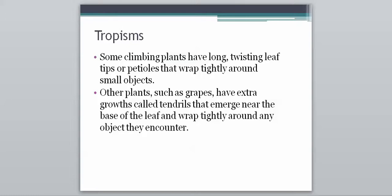Other plants, such as grapes, have extra growths called tendrils that emerge near the base of the leaf and wrap tightly around any object they encounter. So tendrils is an important word. It's almost kind of like the fingers of a plant, if you will. That's how strongly they can kind of wrap around and grab onto things. So tendrils would be an important word to know.